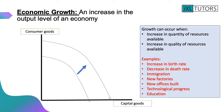Earlier we said that point F on that PPF was not attainable, but it may become attainable if we have economic growth. Economic growth is an increase in the output level of an economy, and it is shown by a shift of the PPF to the right. Growth can occur when there's an increase in the quantity of resources available or the quality of resources available, and there are some examples shown there for you.